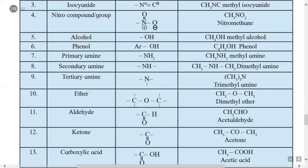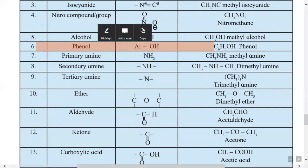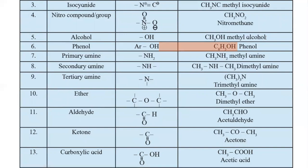The sixth type is phenol, which also contains an OH group, but it is bonded to an aromatic ring like benzene. The Ar group is the aryl group; example of an aryl group is C6H5, called phenyl. So phenyl group with OH is commonly called phenol.